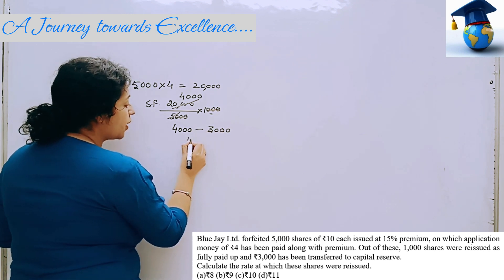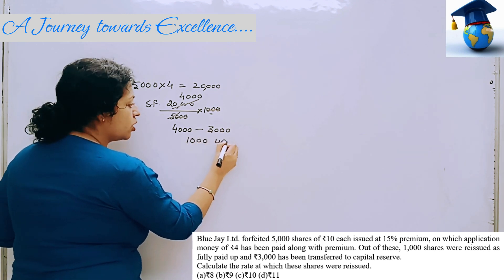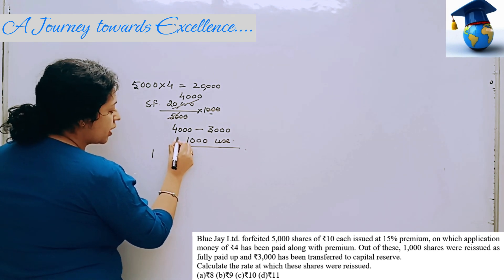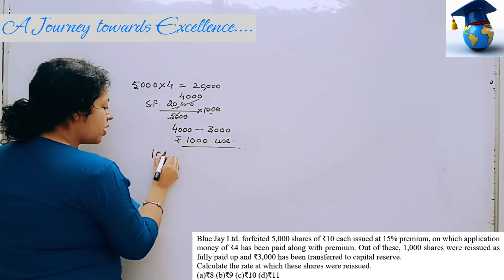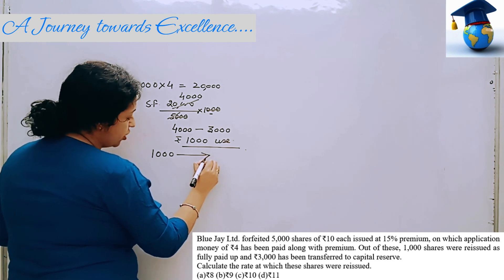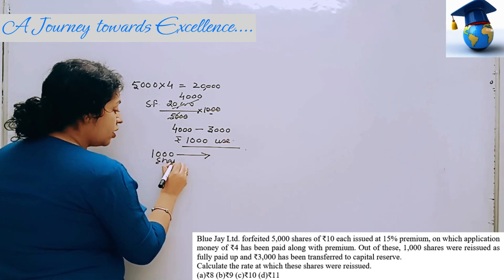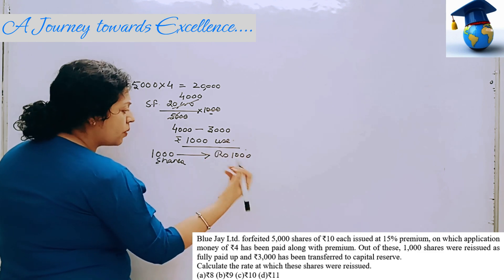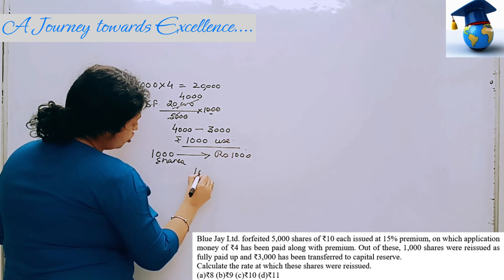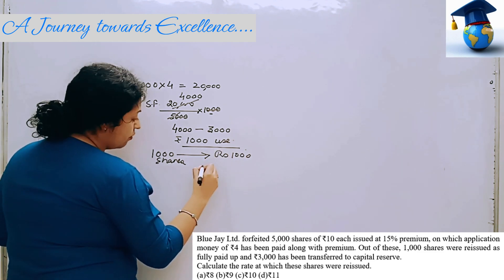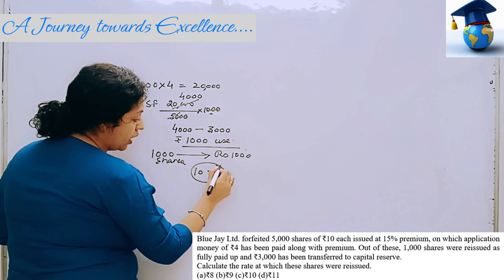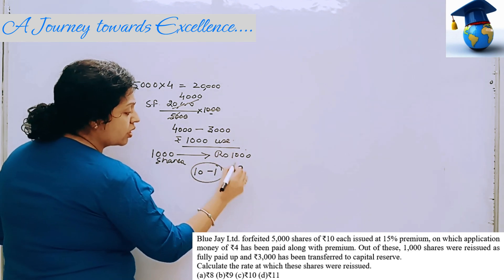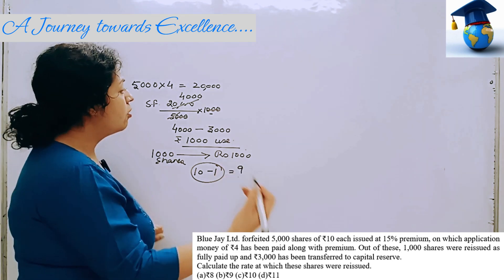So what does this mean? We have used Rs.1,000 at the time of reissue. The value of 1,000 shares — in 1,000 shares we have used Rs.1,000. This means Rs.1,000 per share was used. We have raised 1,000 shares because it is for loss coverage — so basically how much have we reissued?